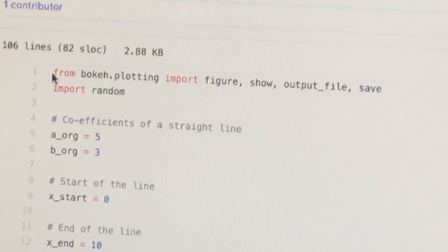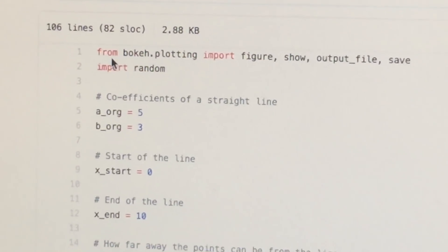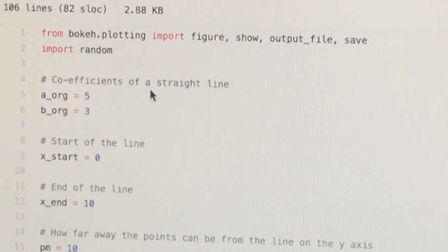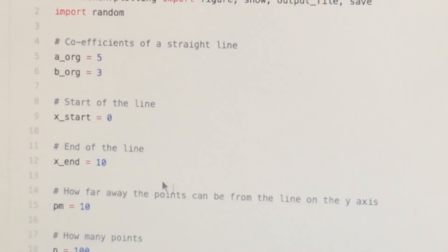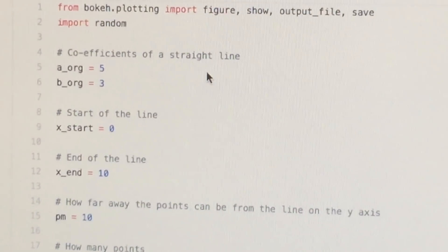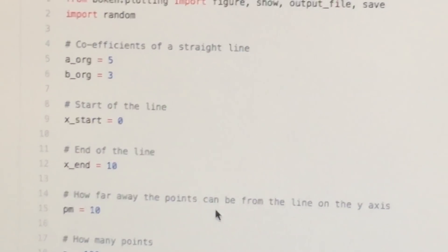Over here I'm importing the plotting interface which is bokeh and the plotting library which is bokeh, and the library random to help me create random values. So these are the coefficients of the straight line that I build my scatter plot around, and that's what I've set them for now.